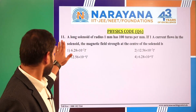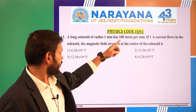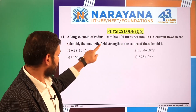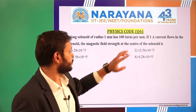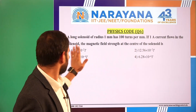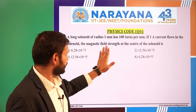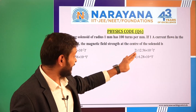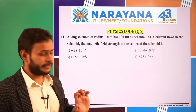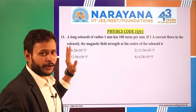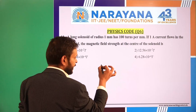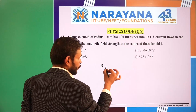We are on question number 11 of code Q6. A long solenoid of radius 1 mm has 100 turns per mm. If 1 ampere current flows in the solenoid, the magnetic flux strength at the center of the solenoid is — and 4 options are given. A long solenoid means an infinite solenoid, so we have to find the field at the center of the long solenoid.